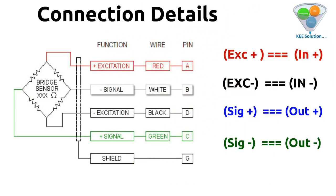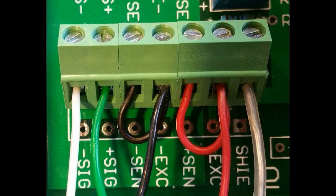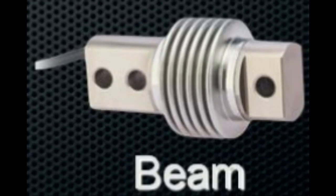Excitation can also be labeled as IN+ and IN−, and signal positive and signal negative can also be written as OUT+ and OUT−. These are the connection details for the load cell and the controller.